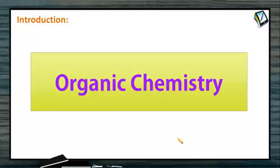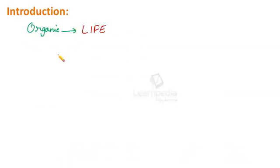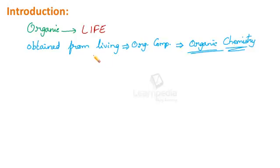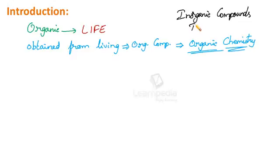First, let us understand the meaning of organic chemistry. Basically, the word organic means life. Therefore, all substances which were obtained directly or indirectly from living organisms are called organic compounds. The branch of chemistry which deals with these compounds was called organic chemistry. All other substances not obtained from living organisms were called inorganic compounds, and the branch dealing with them was called inorganic chemistry.